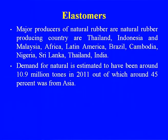Major producers of natural rubber are Thailand, Indonesia, Malaysia, Africa, Latin America, Brazil, Cambodia, Nigeria, Sri Lanka, and India. Demand for natural rubber was estimated to be around 10.9 million tons in 2011, out of which around 45 percent was from Asia. The Asian countries are making huge amounts of natural rubber.